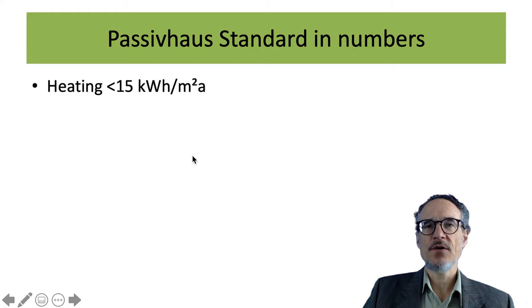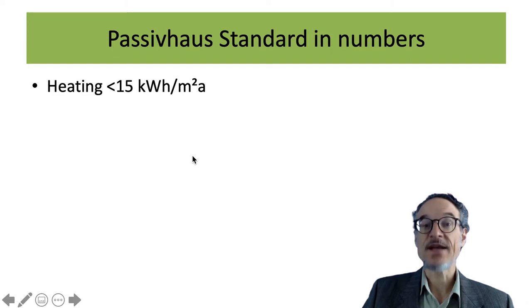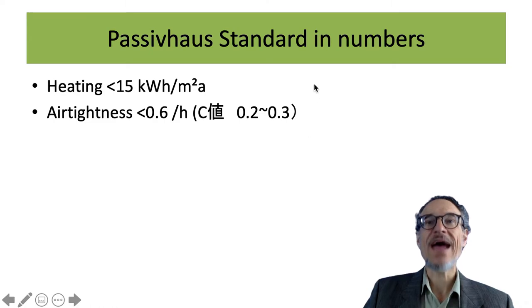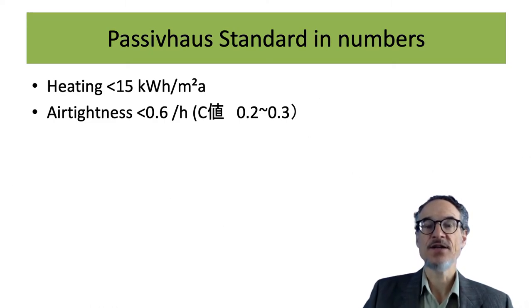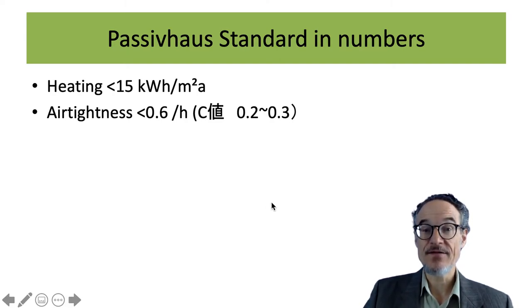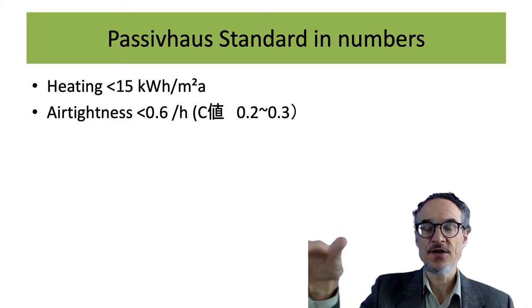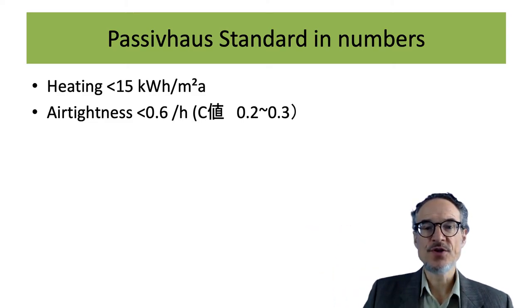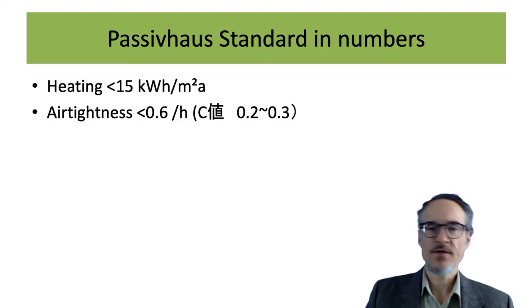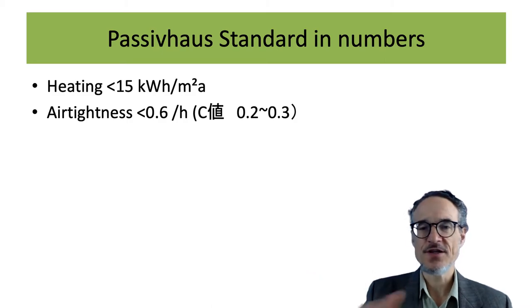That's the main energy use part of the Passive House standard. There's also an air tightness level of less than 0.6 air changes per hour. This is a very high level of air tightness, and when you get to that level, you don't have problems with air getting through your insulation.